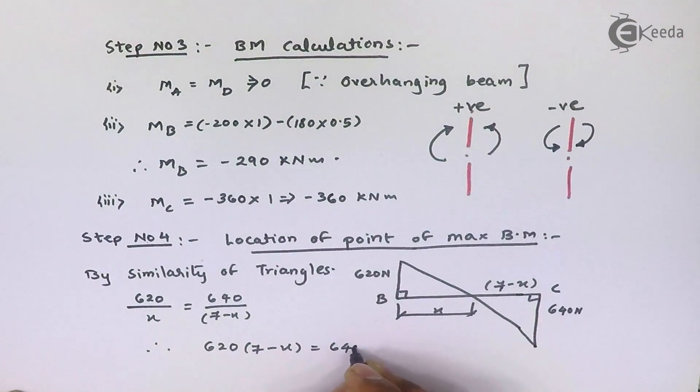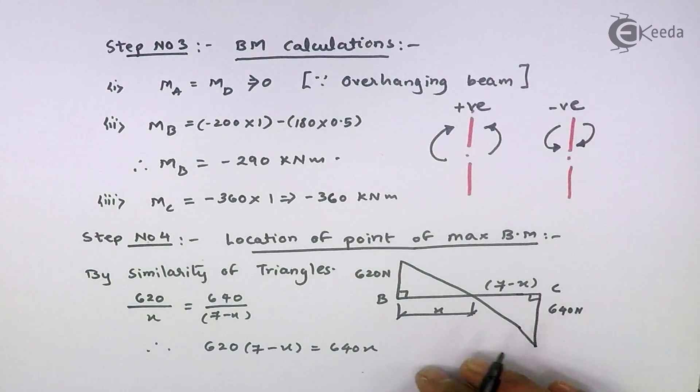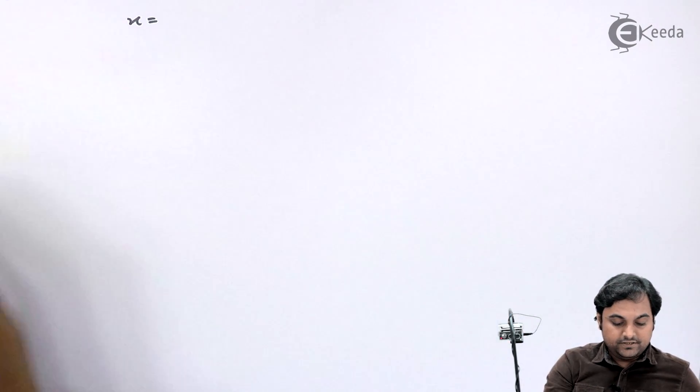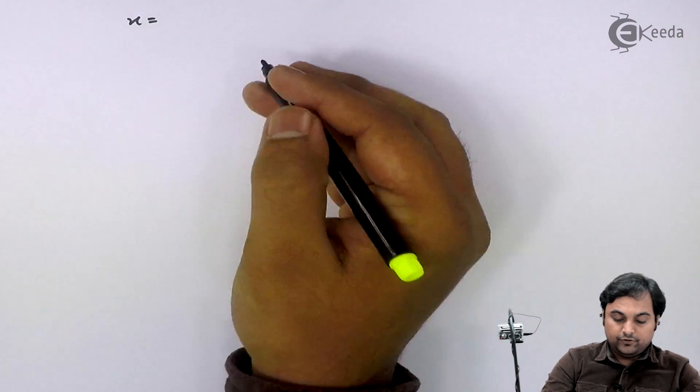620 into 7 minus X is equal to 640X. If I keep X terms on one side and numbers on the other side, I will be getting the answer of X that comes out to be 3.44 meters.